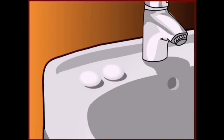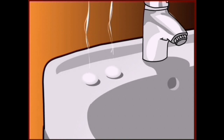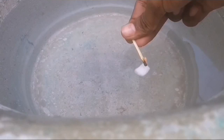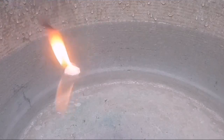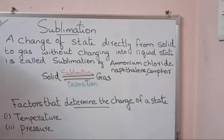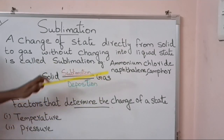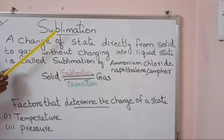Another example of sublimation is naphthalene balls. Some mass of naphthalene balls will convert to gas and get reduced in size when exposed to air. Camphor is also an example of a sublimable volatile substance. A change of state directly from solid to gas without changing into liquid state is called sublimation. Examples are ammonium chloride, naphthalene, camphor, etc.